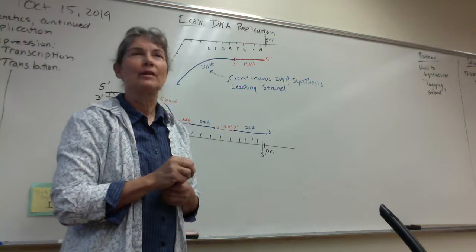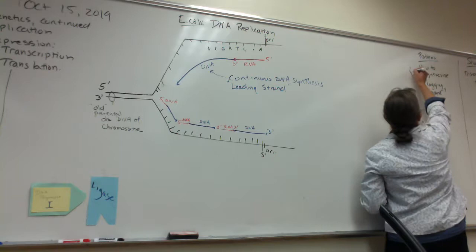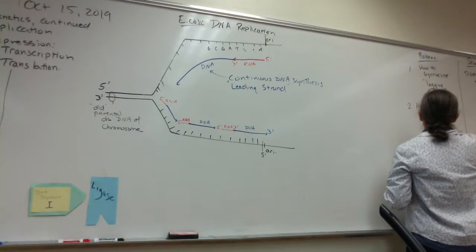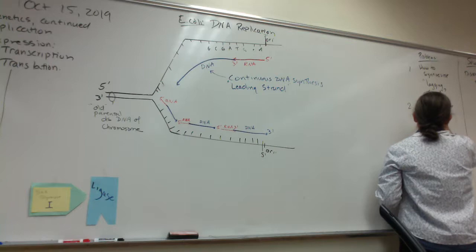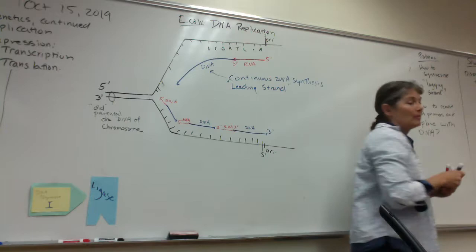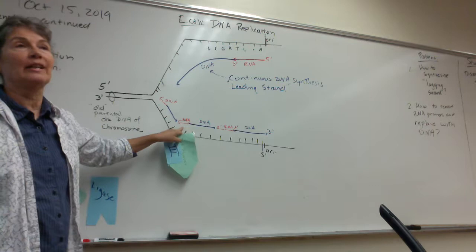Now chromosomal DNA shouldn't be alternating RNA and DNA. We want to get rid of the RNA and replace it with DNA — that's the next problem. DNA polymerase 3 is synthesizing DNA, hits an RNA primer, and can't do anything. It can't remove the RNA primer.